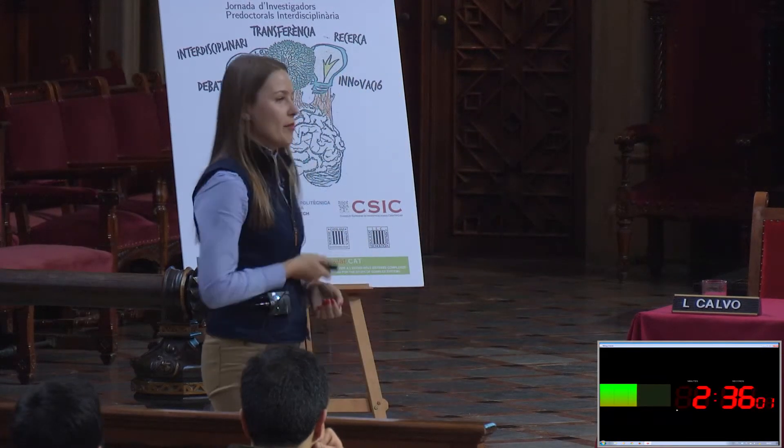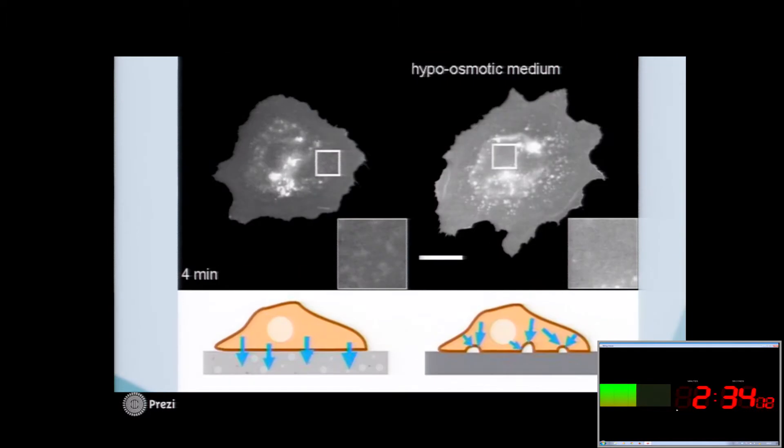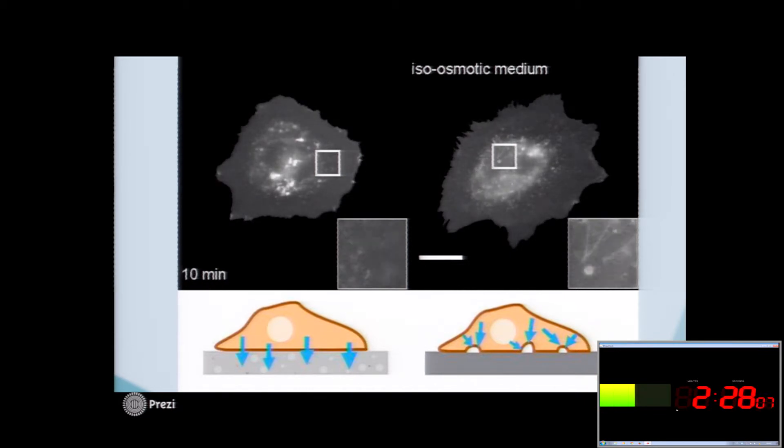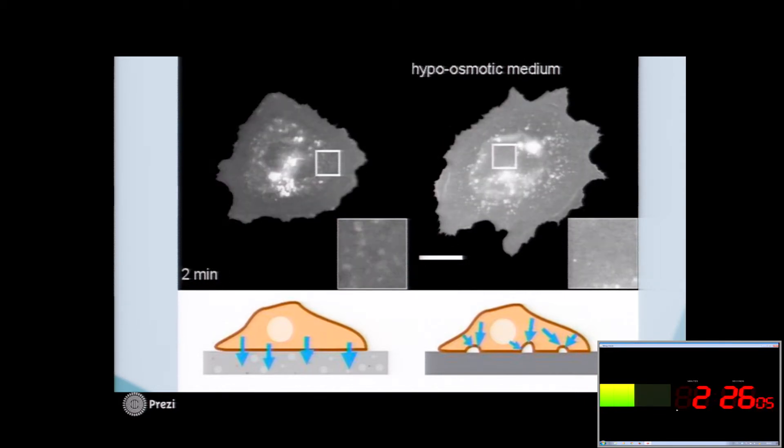And this is exactly what happened. Here you can see that in the water permeable substrate that is seen on the left, VLDs do not occur, while on a water impermeable substrate on the right, we clearly observe the VLDs.